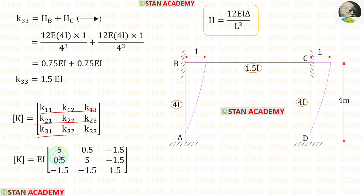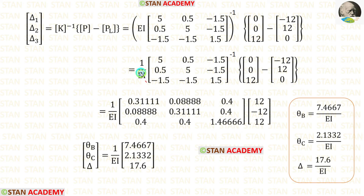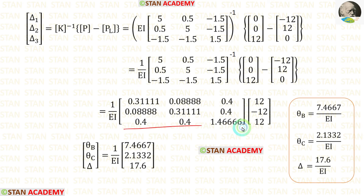We have now found all rows of the stiffness matrix. Let us apply the values, keeping EI outside. In the formula we apply everything: EI inverse is 1/EI and we add the two matrices. After adding, we get the combined matrix and find its inverse — you can apply all values in a calculator (see the link in the description for how to find the inverse). After multiplying the matrices, we obtain theta B, theta C, and delta.